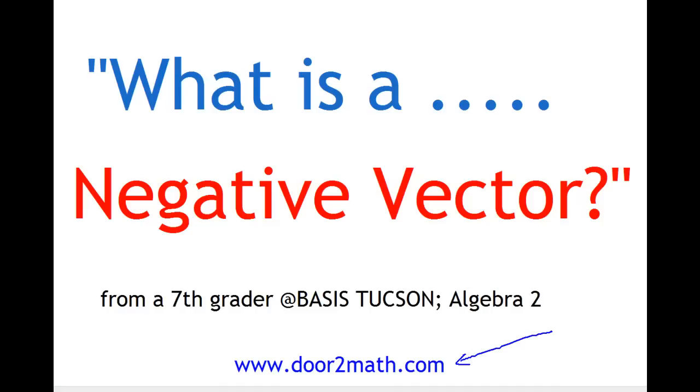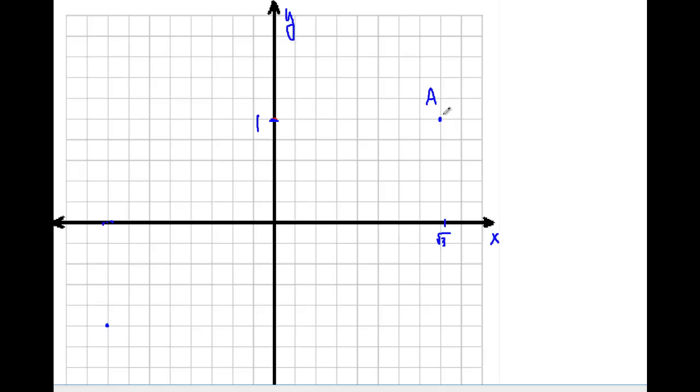Alright, let's get started. The negative vector is really just another way to describe a Cartesian point. What I have here is a point A that in Cartesian coordinates is radical 3 on the x-axis and one unit away from the origin. We use the origin as our reference point here.